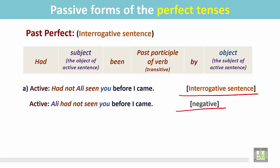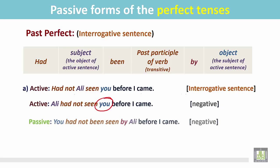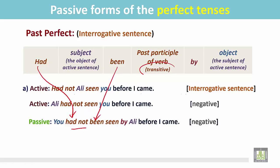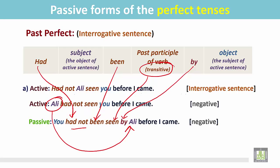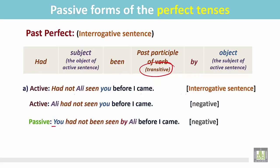This is in the negative as a statement. The object of the active sentence becomes the subject in the passive — 'you' is now the subject. Then comes 'had not been', the past participle form of the transitive verb 'seen', the preposition 'by', and the subject of the active sentence becomes the object in the passive — 'Ali'. We don't change the sentence after the conjunction; it is unchanged: 'You had not been seen by Ali before I came.'